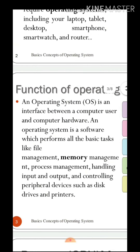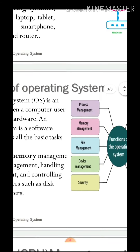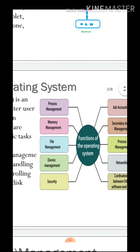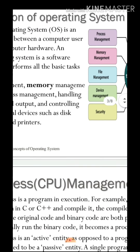An operating system (OS) is an interface between a computer user and computer hardware. An operating system is a software which performs all the basic tasks like file management, memory management, process management, handling input and output, and controlling peripheral devices such as disk drives and printers. The functions of the operating system are: process management, memory management, file management, device management, and security. There are many more things which you will see ahead.